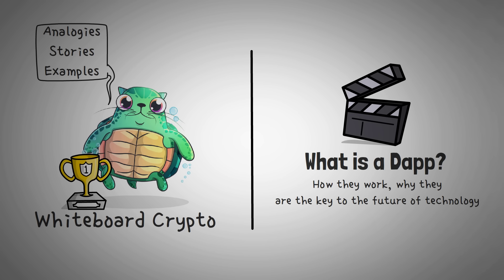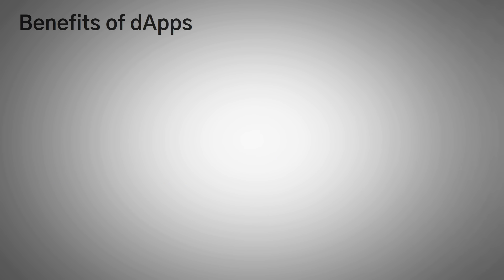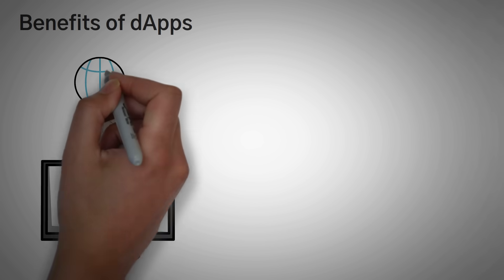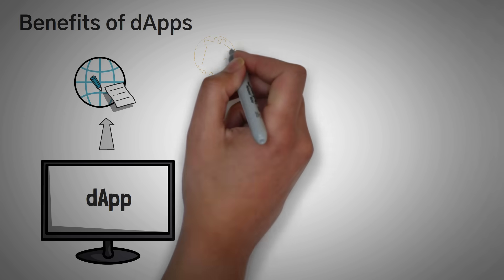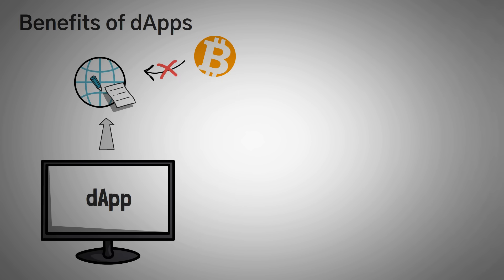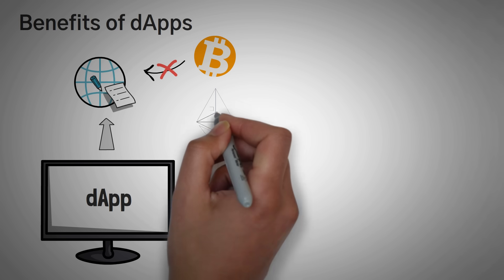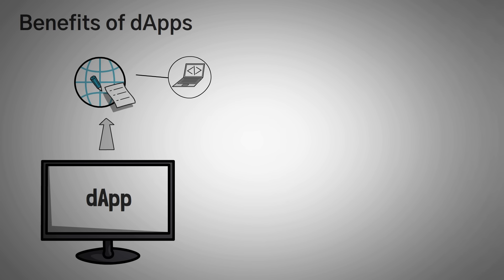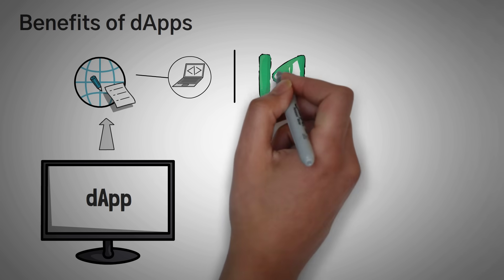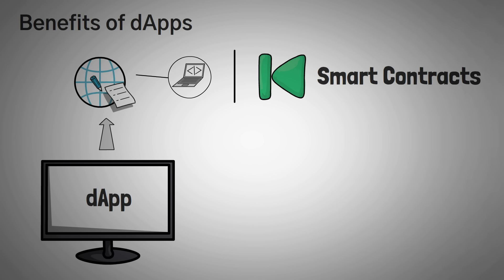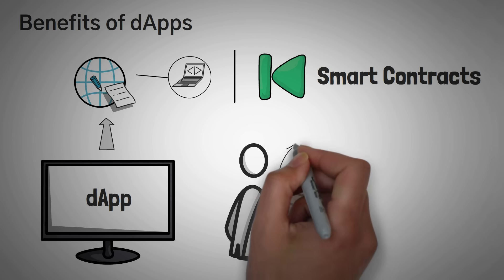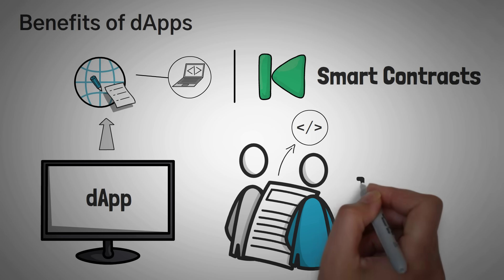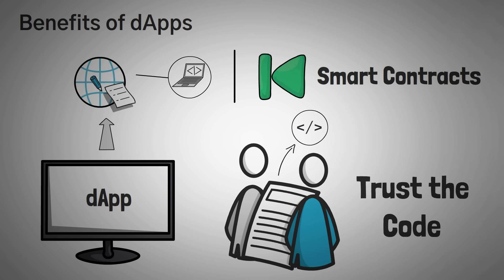First, we're going to go over some of the benefits of dApps, then cover the different types of them, including specific examples. The first thing you need to know is that dApps can only be built on smart contract networks. This means a blockchain like Bitcoin cannot utilize dApps — Bitcoin was designed to only allow the sending of its native coin. Ethereum, however, can utilize smart contracts, which is code that makes up a program to do more complicated things. In short, they allow two people to make an agreement written in code so they don't have to trust a third party — they can simply trust the code.